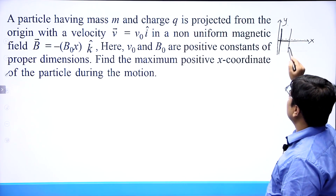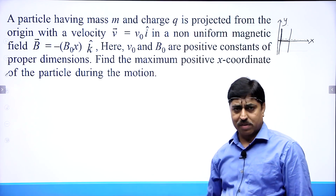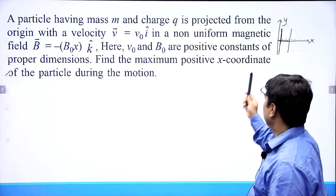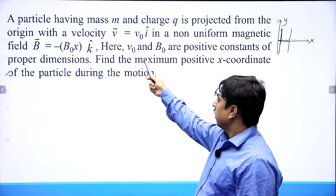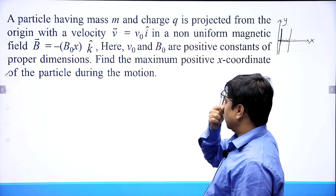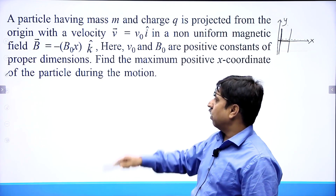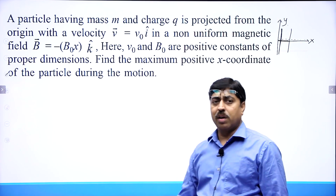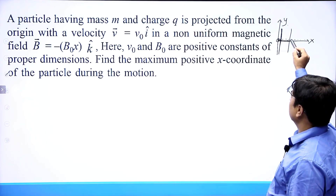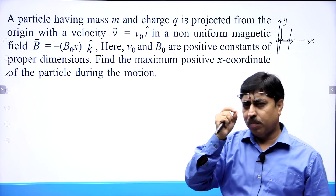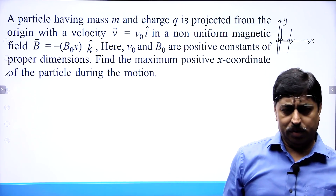When you move from here to here, the value of magnetic field has changed because the x coordinate has changed. The magnetic field strength is increasing as you move along the x axis. If I project a particle from here in this direction, then what will be the maximum x coordinate of the particle? That is the question.